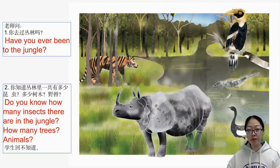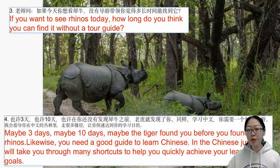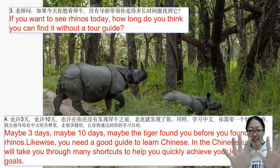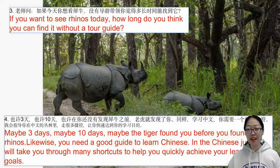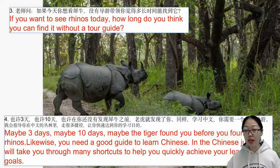This is a picture of a jungle. Have you ever been to a jungle? Do you know how many insects, trees, and animals there are? If you want to see rhinos, how long do you think it would take without a tour guide — maybe 3 days, 10 days, or even a month? Maybe the tiger would find you before you found the rhinos! Likewise, you need a good guide to learn Chinese. In the Chinese jungle, I will take you through many shortcuts to help you quickly achieve your learning goals.